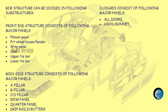BIW structure can be divided into the following sub-structures. Front end structure consists of: plenum panel, front wheel house fender, wing panel, cowl, upper tie bar, and lower tie bar. Body side structure consists of major panels: A pillar, B pillar, C/D pillar, ring panel, quarter panel, drip rails, and gutters. Closures consist of all doors, hood, and bonnet.